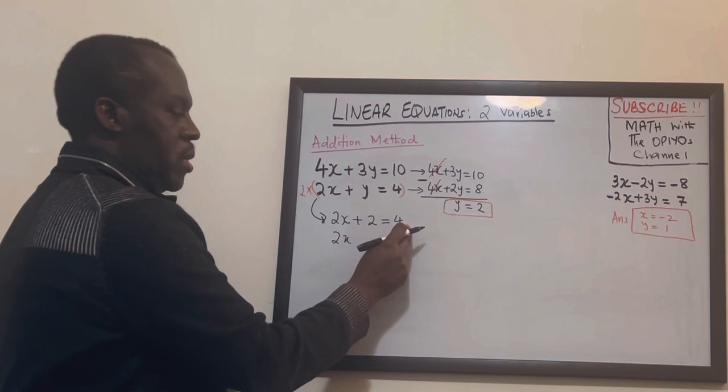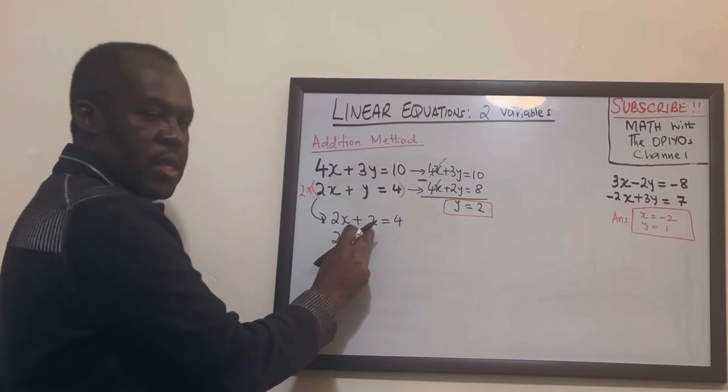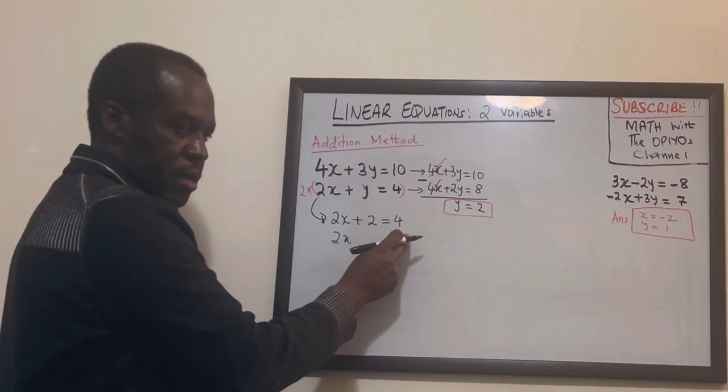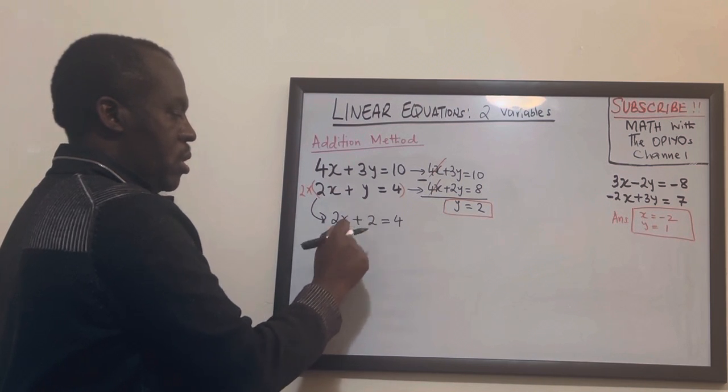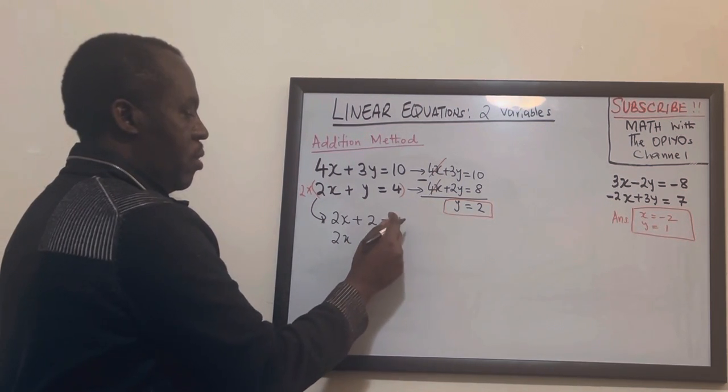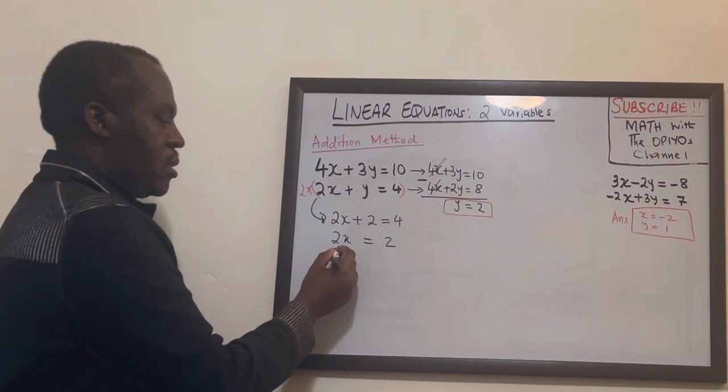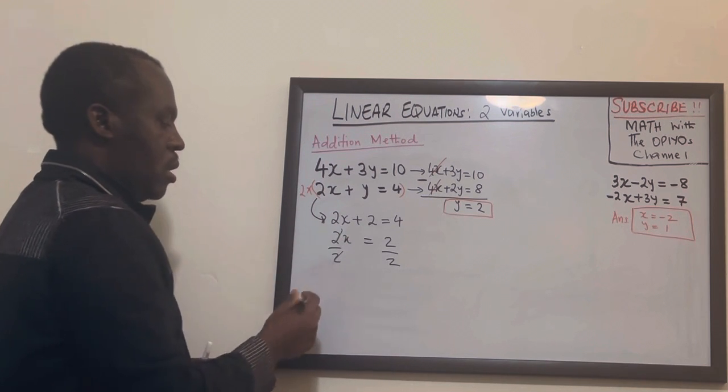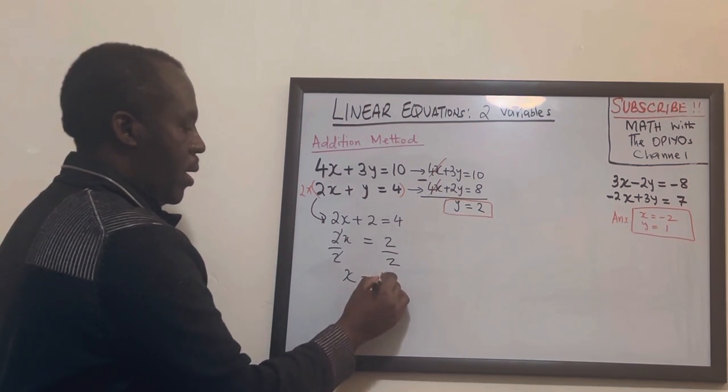Now I have to take 2 to this side. So that means to eliminate 2 on this side I'll take away 2. So whatever you do on the left you do on the right. So minus 2 minus 2. So if I take away 2 this one goes and then 4 take away 2 will give me 2. To remove the x I divide by 2 divide by 2 so the 2 crosses and I have x equals 1.